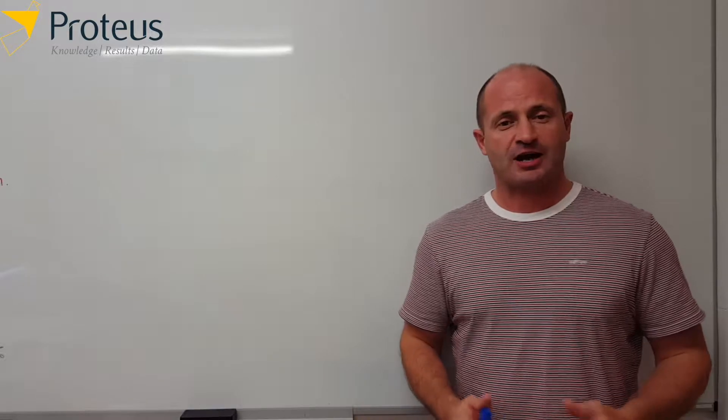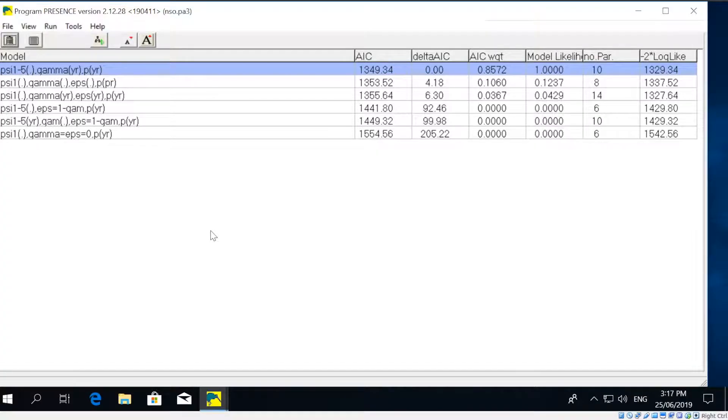So firstly, suppose we've got a multi-year study. On screen now I've got a video going through the steps in Presence. Suppose we've got data from a five-year study, and I've got it set up here already as a project. First, we're going to fit a multi-season model in Presence, so we go up the Run menu and select Multi-season.